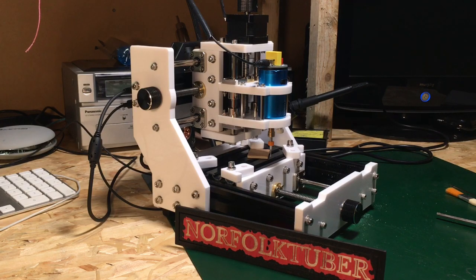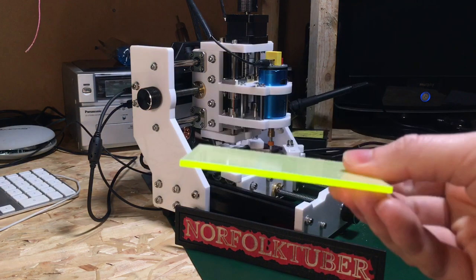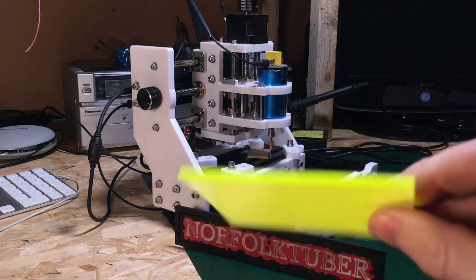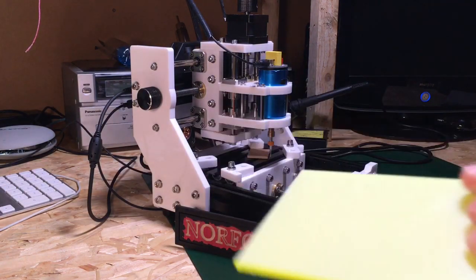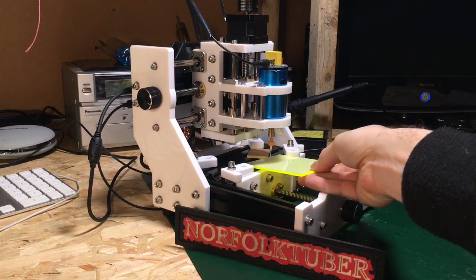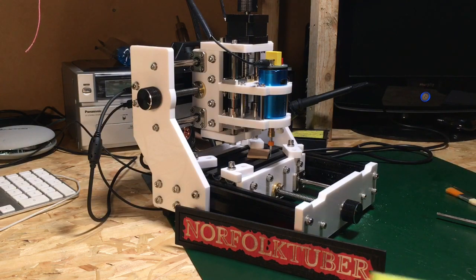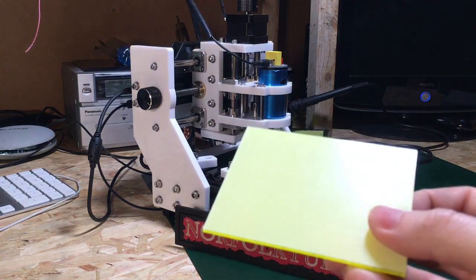Right, so we've got the CNC here which I got from banggood.com. I'll put a link in the description. So today I got some of this acrylic sheet here from craft shop. They're offcuts and they just happen to be the right size for the little CNC machine, and I'm going to be making a keyring out of it.